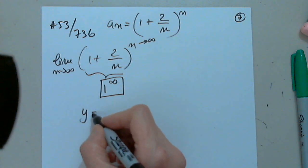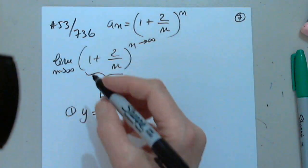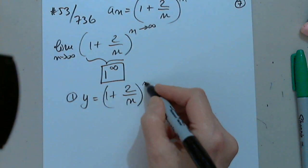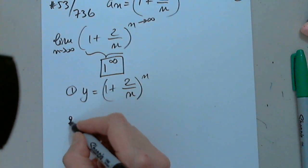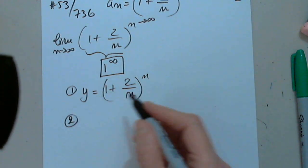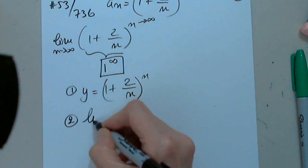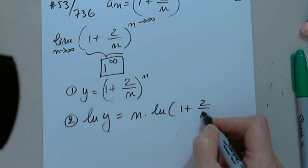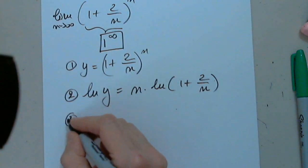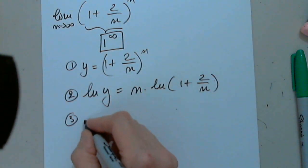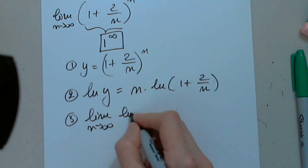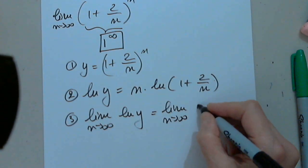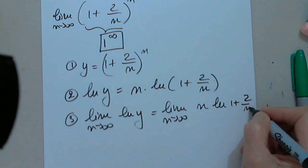Step one: we denote this by y. Step two: we apply log to both sides. So natural log y equals n times natural log of 1 plus 2 over n. Step three: we apply the limit to both sides. The limit as n approaches infinity of natural log y equals the limit as n approaches infinity of n times natural log of 1 plus 2 over n. We're trying to determine this limit now.